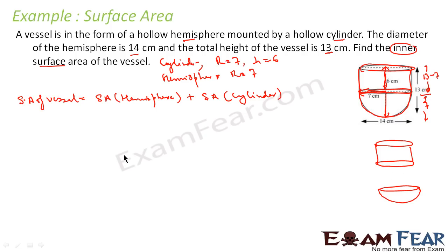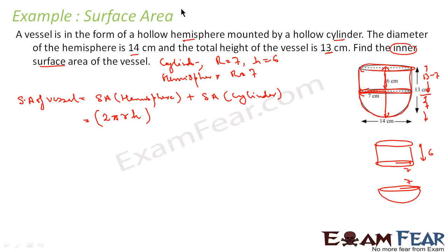The total surface area is the surface area of the hemisphere plus the surface area of the cylinder. The dimensions are: cylinder height = 6, radius = 7, hemisphere radius = 7. The surface area of the hemisphere is 2πr². Surface area of a full sphere is 4πr², and hemisphere is half of that, giving 2πr².